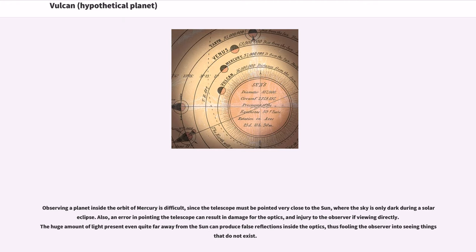Observing a planet inside the orbit of Mercury is difficult, since the telescope must be pointed very close to the Sun, where the sky is only dark during a solar eclipse. Also, an error in pointing the telescope can result in damage to the optics, and injury to the observer if viewing directly. The huge amount of light present even quite far away from the Sun can produce false reflections inside the optics, thus fooling the observer into seeing things that do not exist.